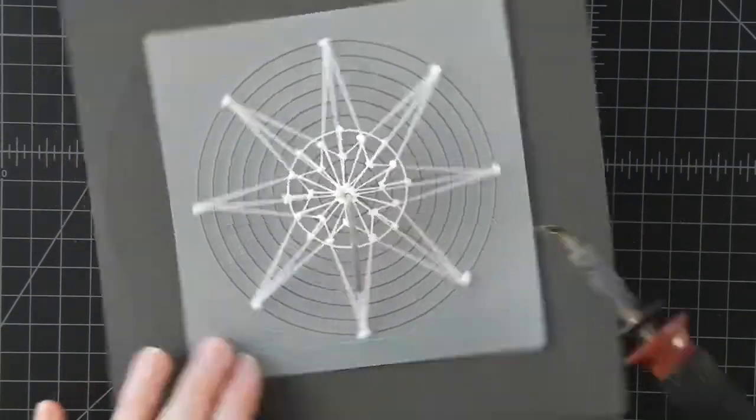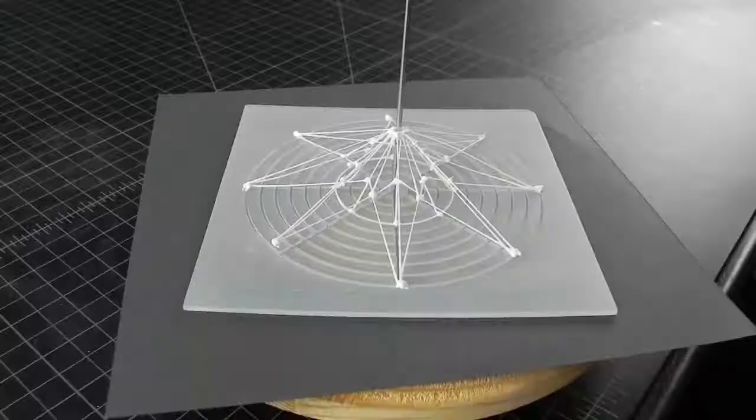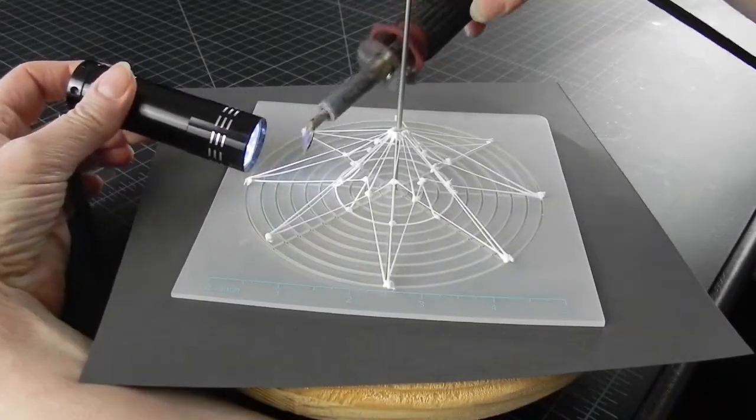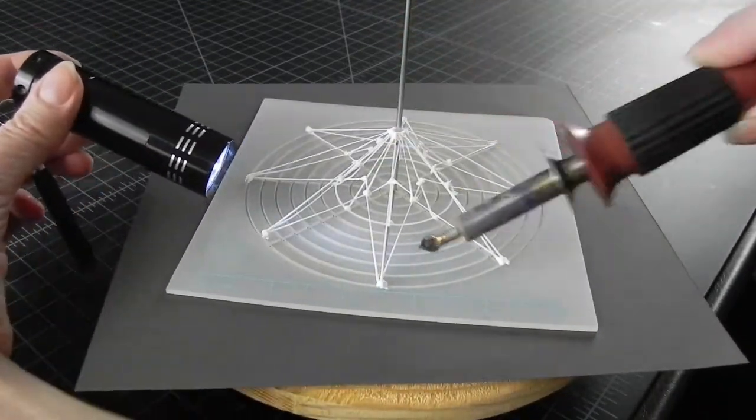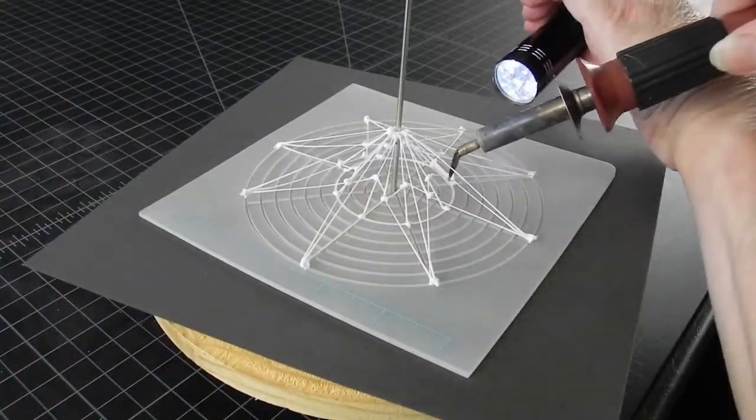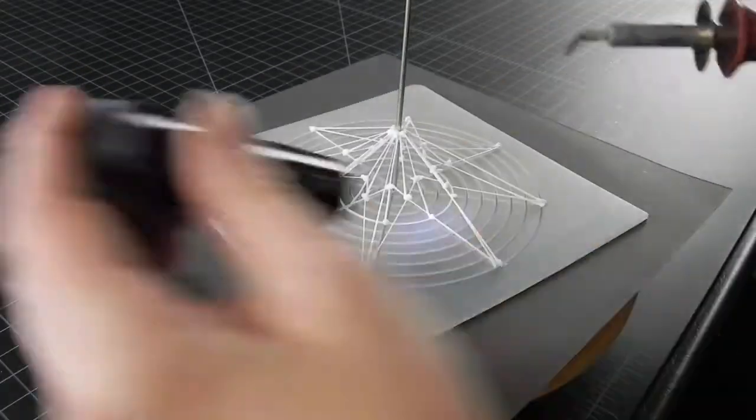I actually do this after every stage. Also, backlighting your strands help you actually find them easier. I use a flashlight or a small clip-on light for this.